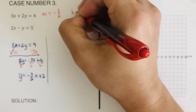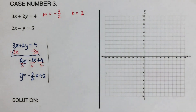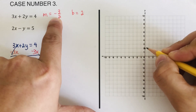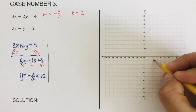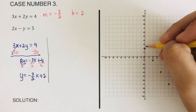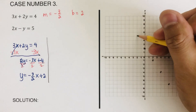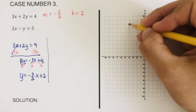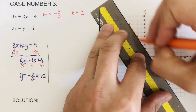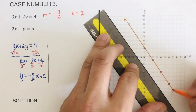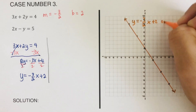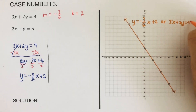So the slope m for the first line is negative three over two and the y-intercept b is two. We start plotting at y-intercept two, then go down three right two repeatedly, and also up three left two. We connect these dots to create the first line, labeled y equals negative three over two x plus two, or equivalently 3x plus 2y equals 4.